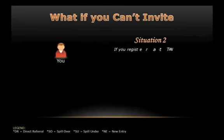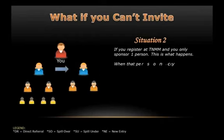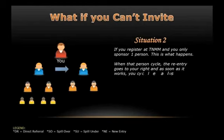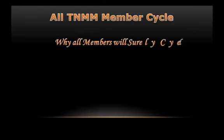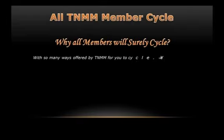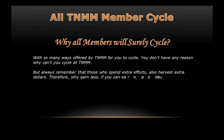The second situation is: if you register at TNMM and you only sponsor one person, this is what happens. When that person cycles, the re-entry goes to your right, and as soon as it works, you cycle also. Note: you cycle faster if you have your own direct referrals. With what you have seen, I presume you now realize why we can assure you that all TNMM members really cycle — with so many ways offered by TNMM, you don't have any reason why you can't cycle.